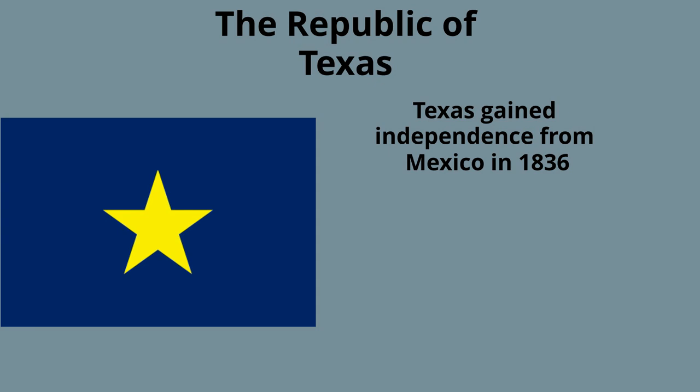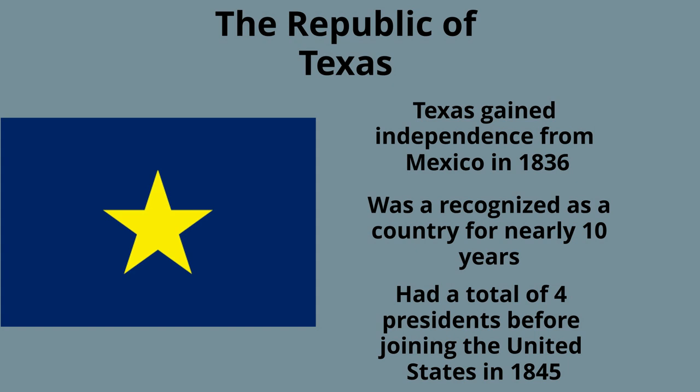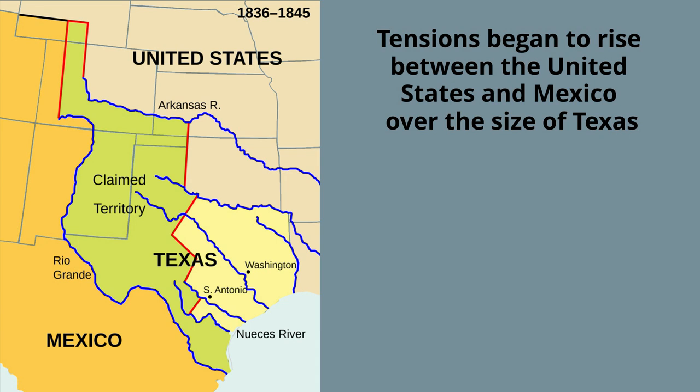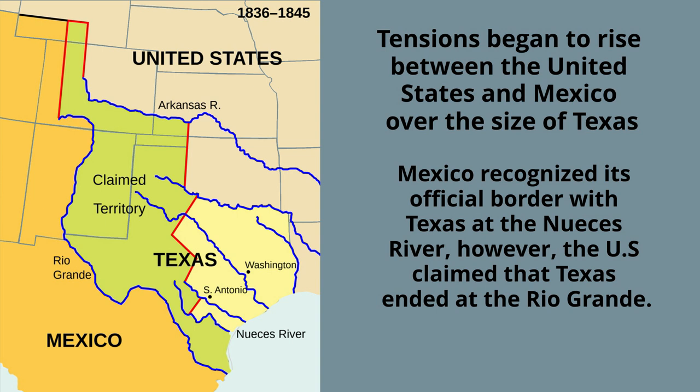In 1836, Texas gained its independence from Mexico. After a near 10-year struggle to remain independent, the Republic of Texas would become the 28th state to join the Union in 1845. This would bring border disputes between Mexico and the United States. The main dispute was the size of Texas — Mexico claimed it ended at the Nueces River, while the United States claimed it ended at the Rio Grande.